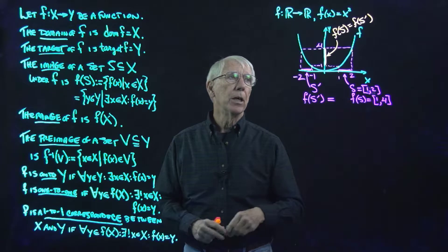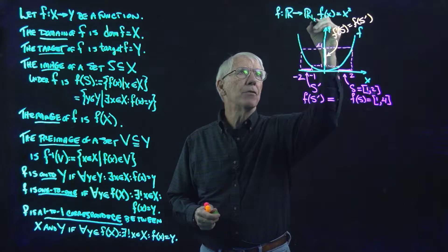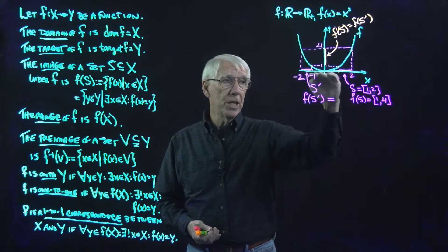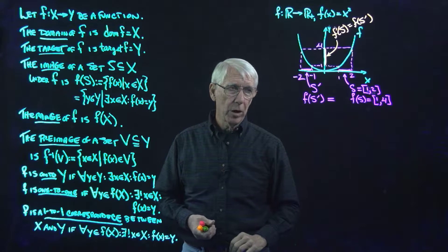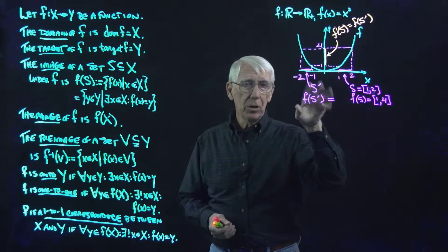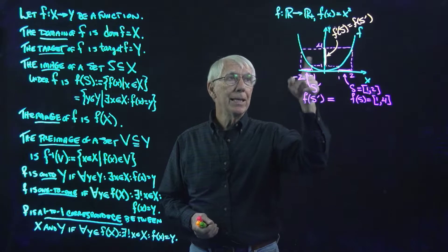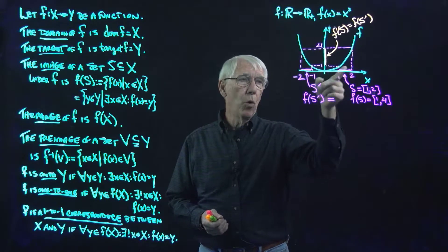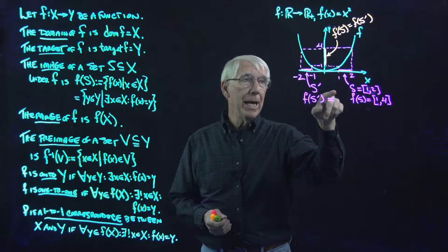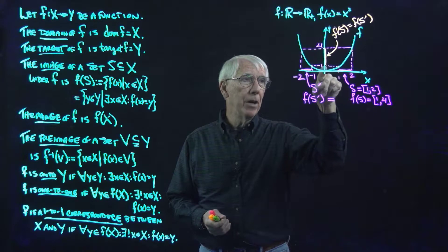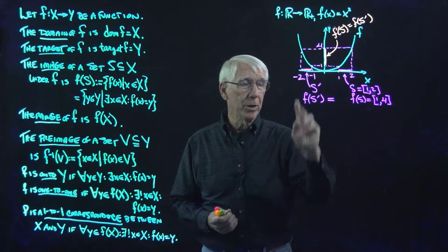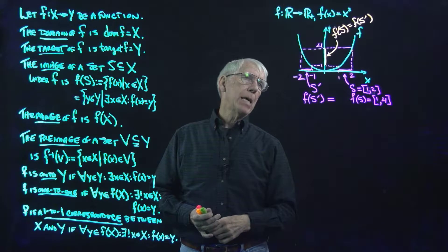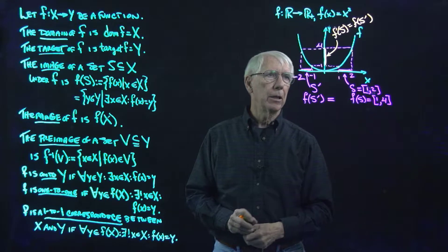But now let me make a little change. Suppose instead I define this function to be from ℝ to ℝ⁺, so that the target space is now just ℝ⁺, and I don't have the negative values of ℝ anymore. The function is still not 1-to-1 for the same reason, but now it is onto. It does map onto all of ℝ⁺, because every non-negative number has 1 — in fact, 2 — numbers in the domain that map to it, except 0, which only has 1.